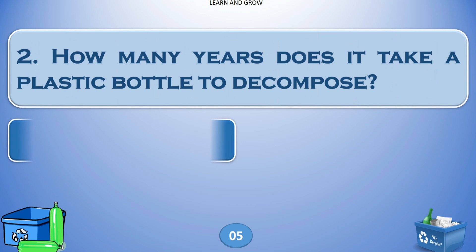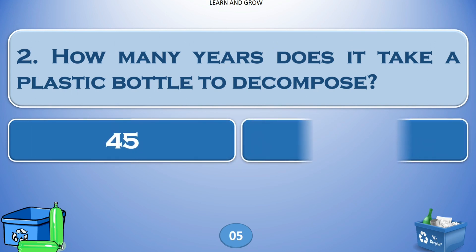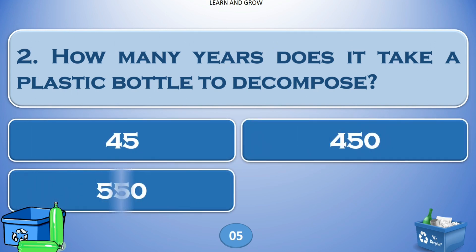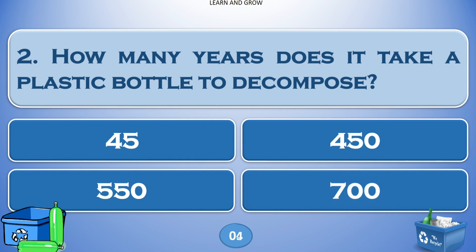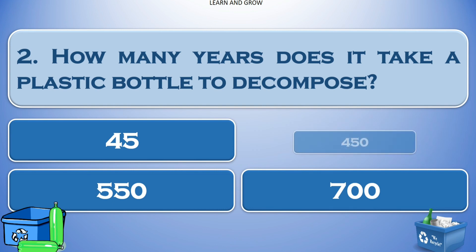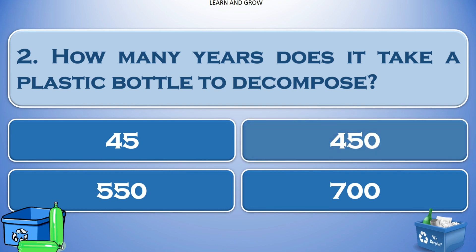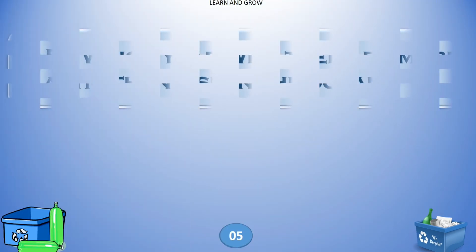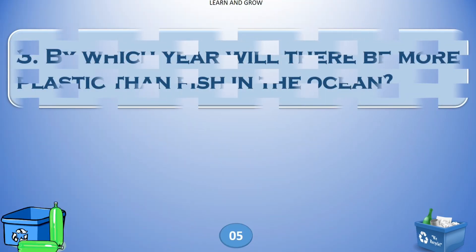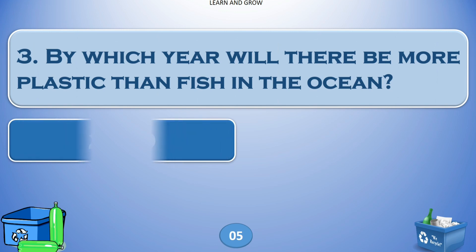How many years does it take a plastic bottle to decompose? Options are: A) 45, B) 450, C) 550, or D) 700. Option B, 450 years.